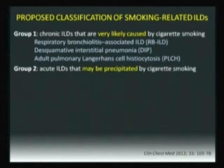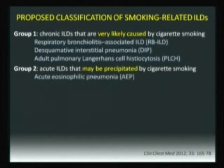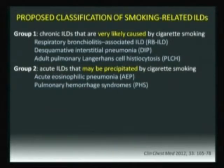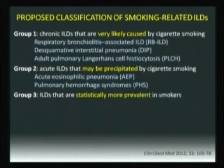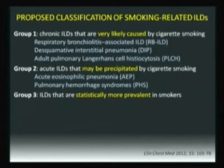The second category is acute ILD — diseases presenting acutely within a few weeks or days that might be precipitated by cigarette smoking. These include acute eosinophilic pneumonia — very dangerous, presenting in young smokers — and pulmonary hemorrhage syndrome, which can be precipitated by smoking within a few days or weeks. Group 3 is ILD statistically more prevalent in smokers, meaning they can be found in non-smokers but smoking is still a risk factor.